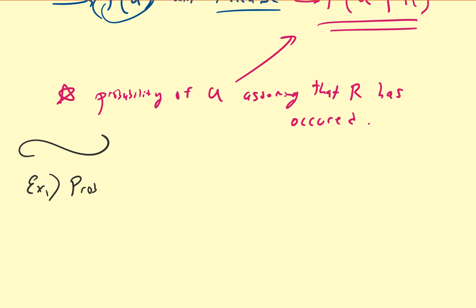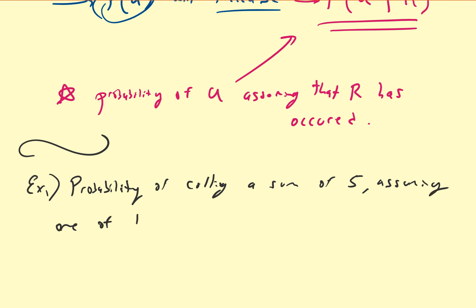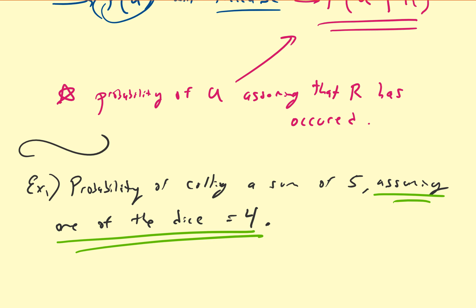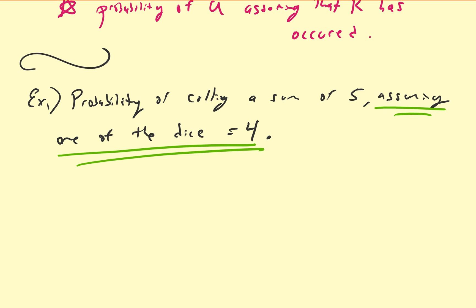Consider this example: what is the probability of rolling a sum of 5? We are going to consider a 6-sided die being rolled, and we are going to assume one of the dice is equal to 4. This has already happened. So that means the sample space is the set of all values that already have a 4 in them.